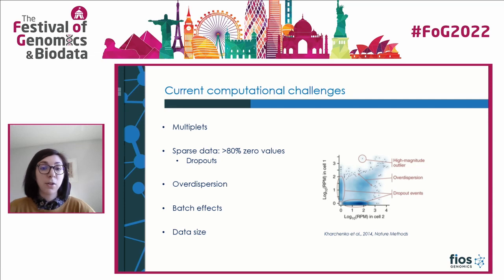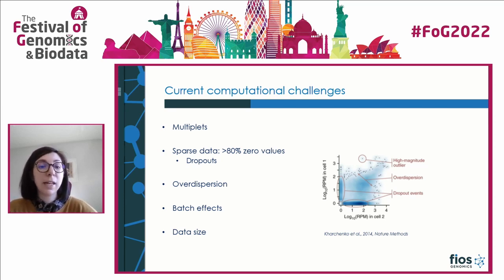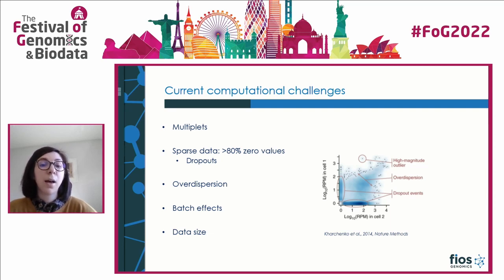There are many computational challenges that are new to single cell data. Firstly, there are multiplets. For droplet-based methods it's common that cells stick together and get the same cell barcode. These libraries no longer represent single cells but show an average expression across all cells of the multiplet and should be removed prior to any downstream analysis.